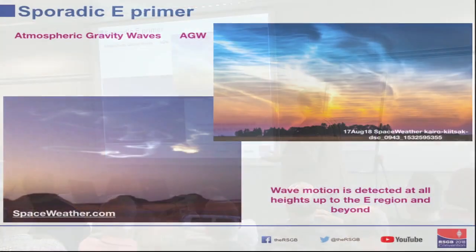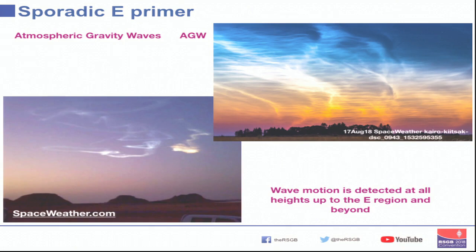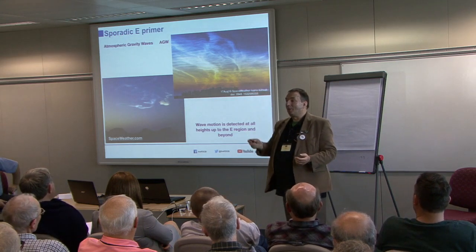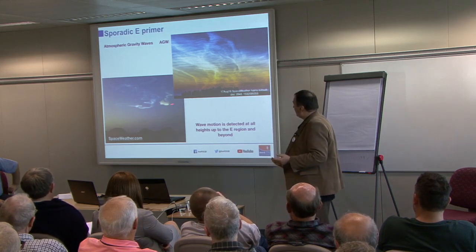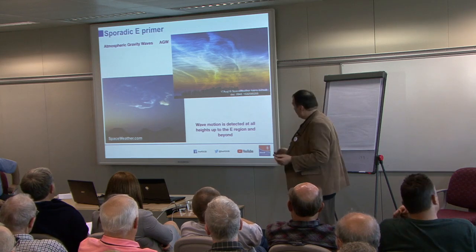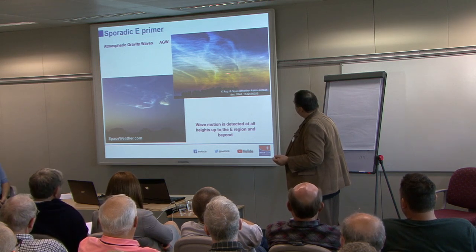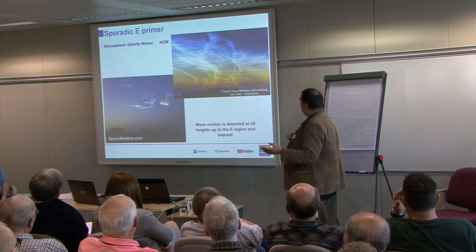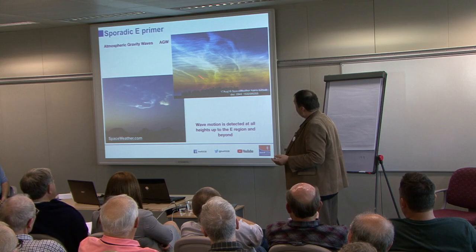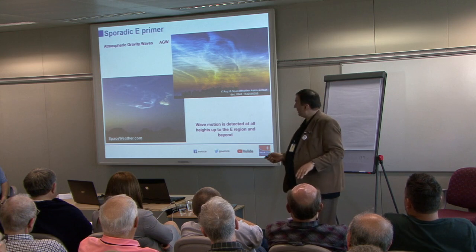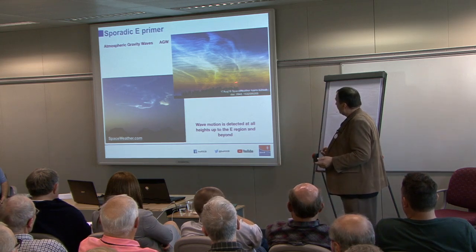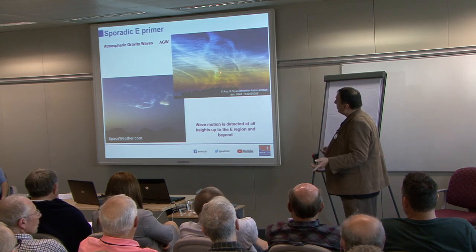Gravity waves can go all the way up into the upper parts of the atmosphere and into the ionosphere. A vapour trail from a rocket launch shows marked changes of direction as different winds at different layers dispersed the plume — that's a characteristic of gravity waves in the upper atmosphere. Noctilucent clouds in the summer months, low on the northern horizon, are at about 85 kilometres up — they tell you that gravity waves do at least get that high. We're very nearly up to the E region, and you can measure wave motion there too. That's the communication.